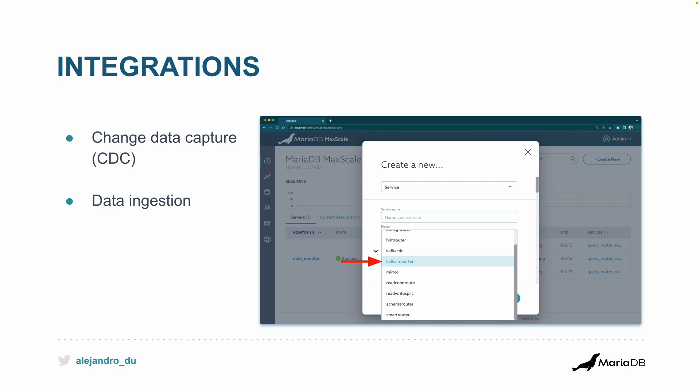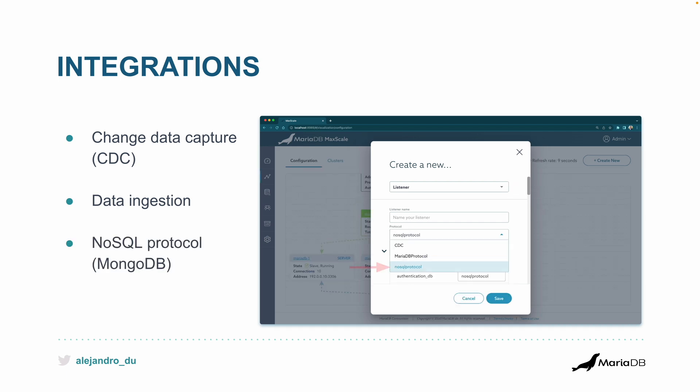You can do this from the primary DB through MaxScale. The NoSQL protocol is pretty cool too. Here in the screenshot I'm creating a new listener — the listener is what the application uses to connect to the database, it has a port and a protocol. There are several protocols: Kafka, MariaDB, and also NoSQL — in this case MongoDB.